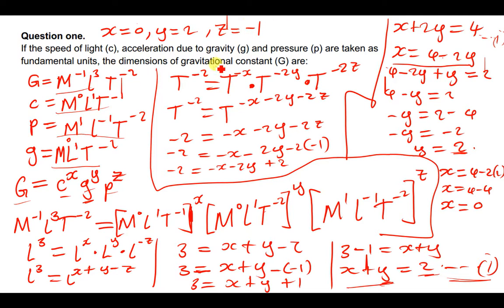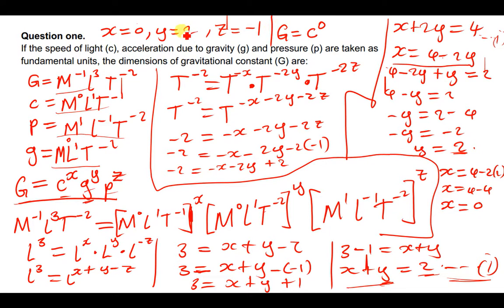Now we can write the final answer. Since we assumed G = C^x · g^y · P^z, substituting the values gives G = C⁰ · g² · P⁻¹. This is the dimensional expression for the gravitational constant G in terms of the fundamental units C, g, and P. This is how you deal with dimensional analysis.